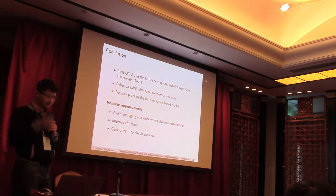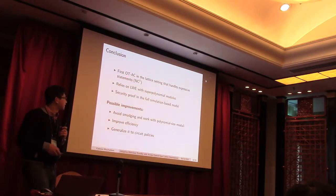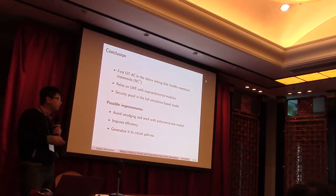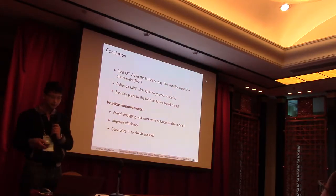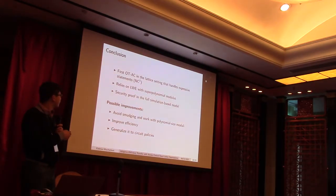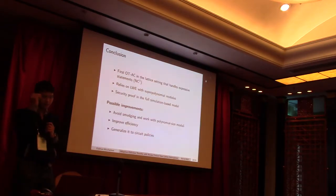So, in the end, what we got is the first adaptive oblivious transfer with access control, which handles expressive statements. Which relies on LWE with smudging, which we want to avoid, and we want to avoid these smudging techniques in order to work with standard LWE. And also security proof has been done in a full simulation-based model.